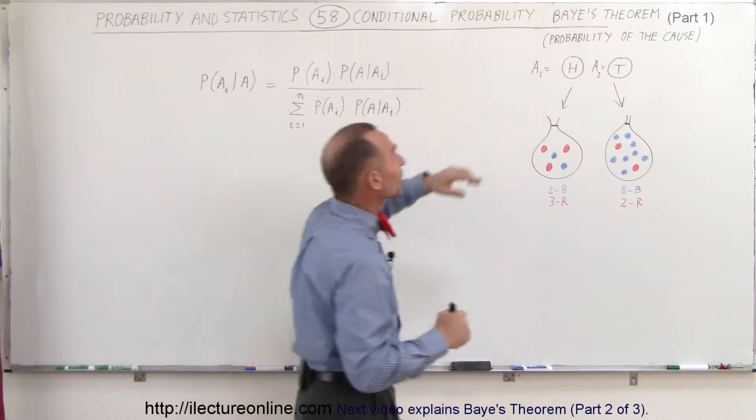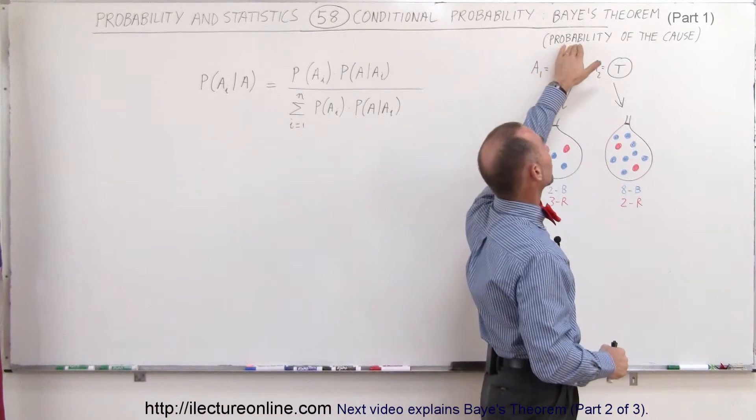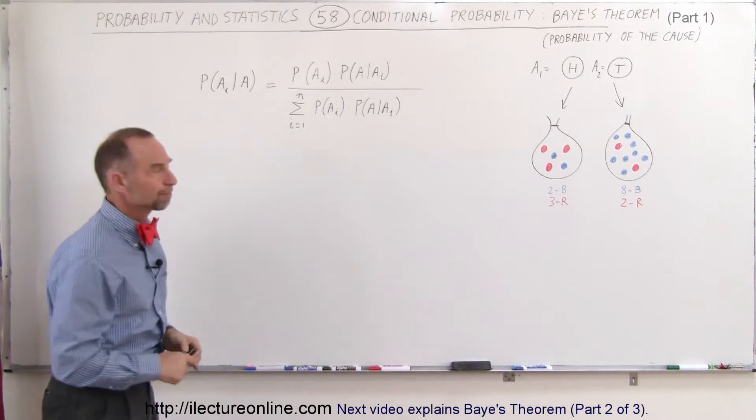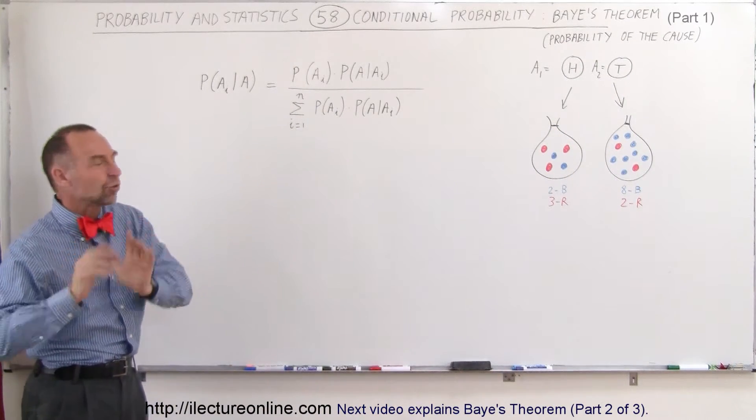Actually, the way to think about Bayes' Theorem is that it's the probability theorem of the cause of some series of events occurring. So, for example, to make it easier to understand,